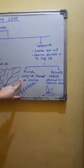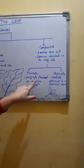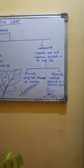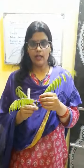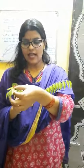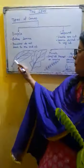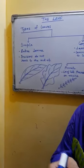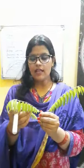Pinnate is the leaf where leaflets are present on a rachis. Examples are neem, rose, and coriander, where you can see the rachis. The rachis is actually the mid-rib of the leaf. The leaflets are present on the rachis, so this is called a pinnate compound leaf. Examples are neem leaves, coriander leaves, and rose leaves.